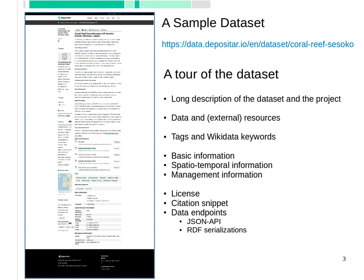Here is an actual dataset from the Depositar on coral soundscapes in Okinawa, Japan. On the left is the page you will get about this dataset at the Depositar. There are long descriptions about the datasets and the projects. A dataset includes multiple data files and links to external resources. You can use text and Wikidata keywords to annotate the datasets, and the metadata comes in three categories: base information, spatial-temporal information, and management information. There are also license and citation information, as well as machine-readable data endpoints to access a dataset and its metadata.